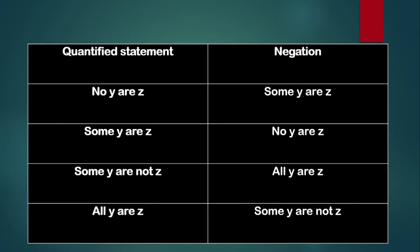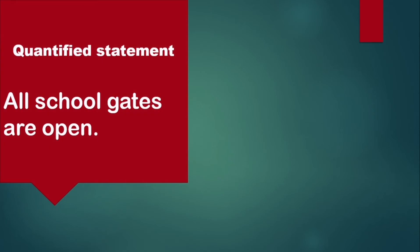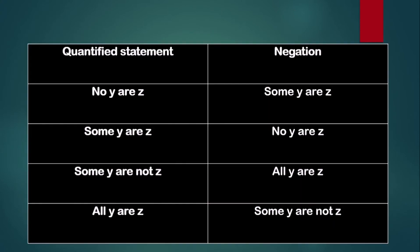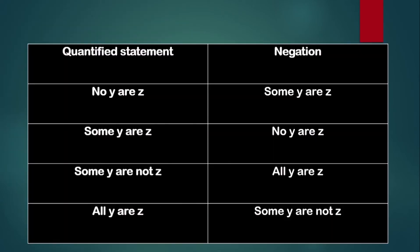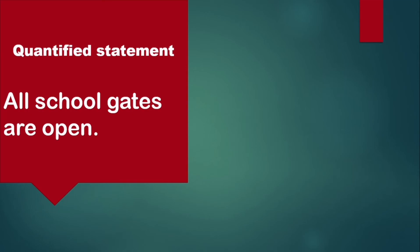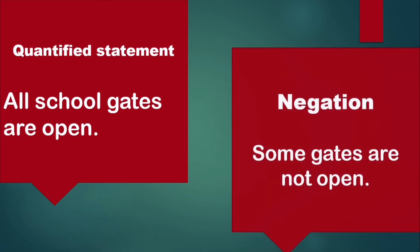To visualize this with examples: if we have the quantified statement 'All school gates are open,' using 'all' from our table, the negation of that is 'Some gates are not open.'